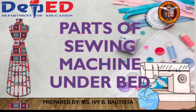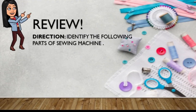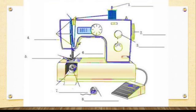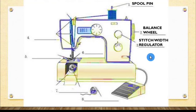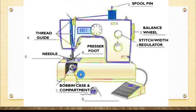But before that, let us review first. Identify the following parts of the sewing machine. Number one is the pull pin. Number two, the balance wheel. Three is the stitch wheel regulator. Number four, thread guide. Five, needle. Six, presser foot. Seven, bobbin casing compartment. Number eight is the bobbin. We will take a closer look on this part because it is part of the under bed.